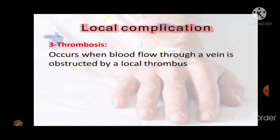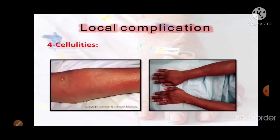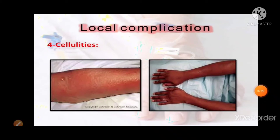Thrombosis occurs when blood flow through a vein is obstructed by a local thrombus. Cellulitis is a serious complication that can include extensive tissue damage, tissue death, and spread of infection to blood, bones, the lymph system, the heart, and the nervous system.